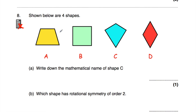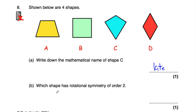Question number 8: we've got four shapes — a trapezium, a square, a kite, and a rhombus. Part A: the mathematical name of shape C is a kite. Part B asks which shape has order of rotational symmetry 2. The trapezium lands on itself once, the square 4 times, the kite once. The rhombus lands on itself twice — so rotational symmetry order 2. That's shape D.